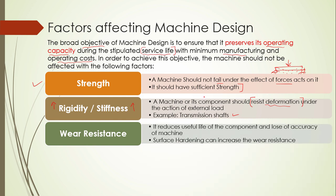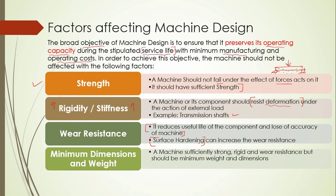Wear resistance — wear is already discussed in a previous video. Wear is when a force acts and one component rubs or moves against another. Wear resistance means resisting that wear. Surface, minimum dimension, and weight are also important — the machine should be strong, rigid, wear-resistant, and careful about weight.